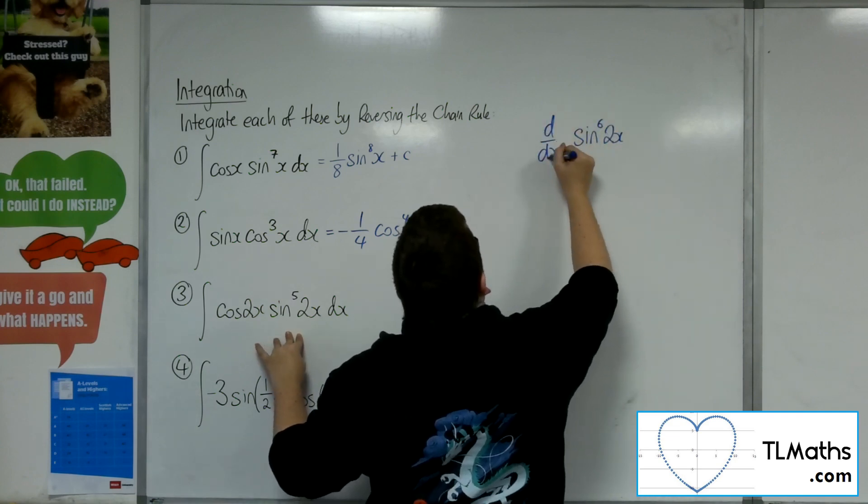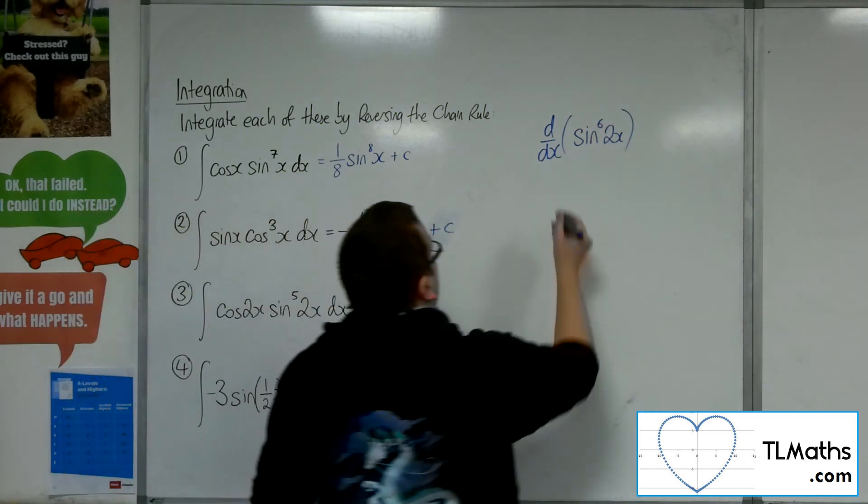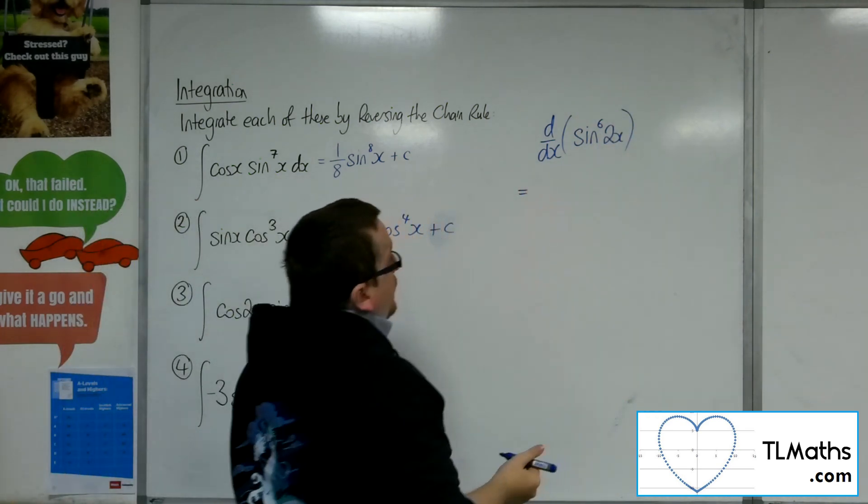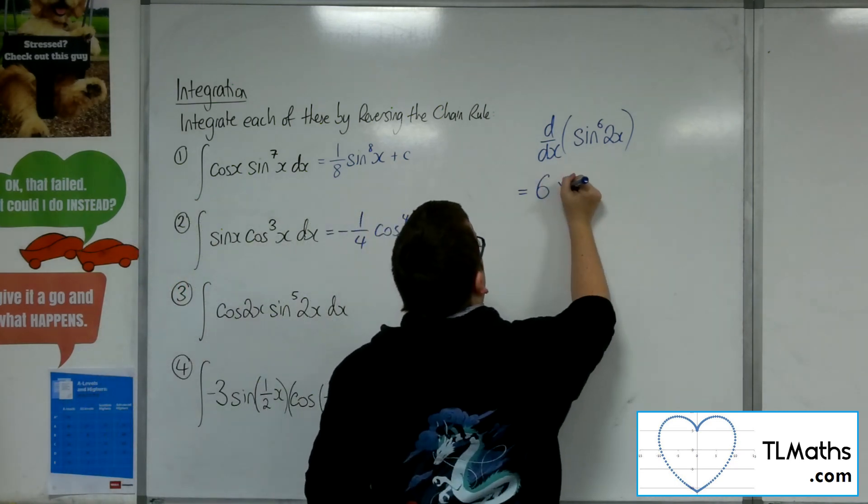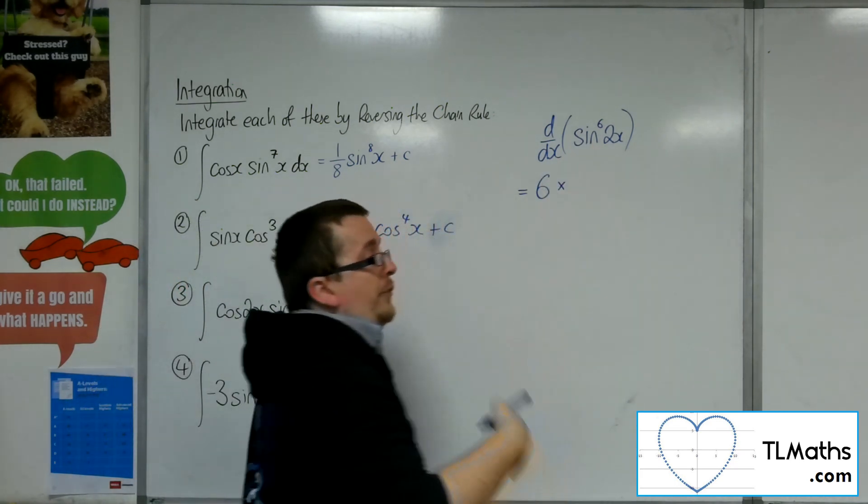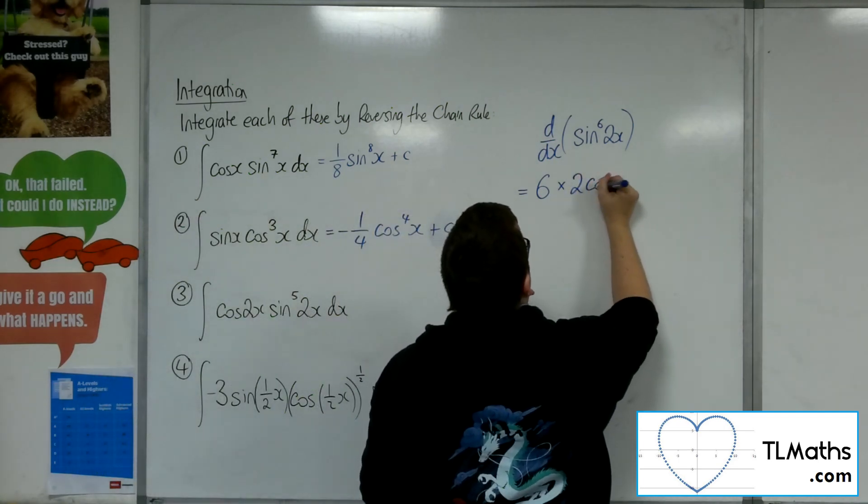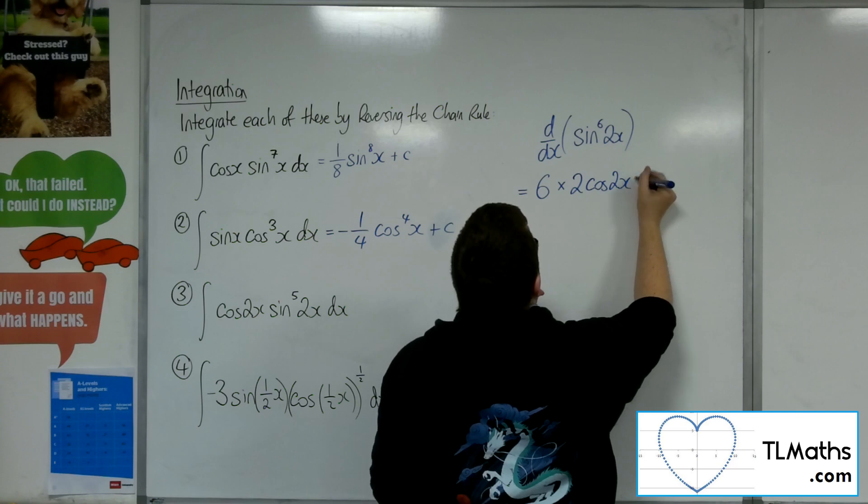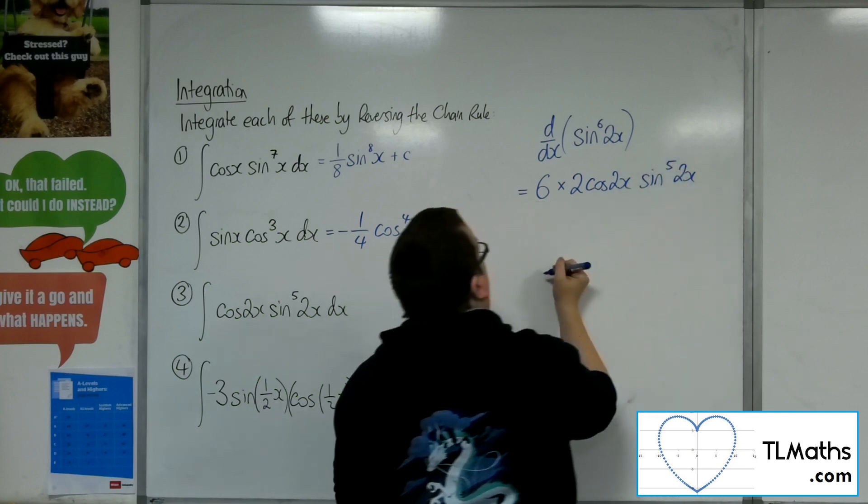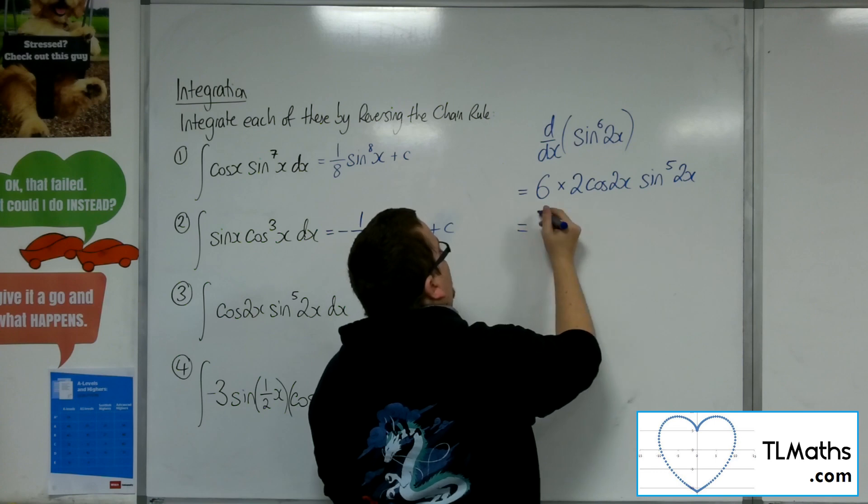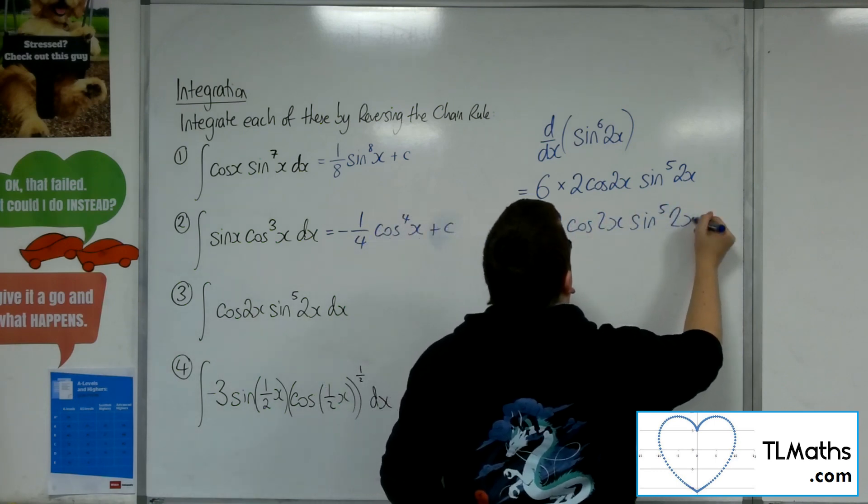So if I were to differentiate that with respect to x, what would I get? Well, I've got the 6 going to come down to the front. Now I've got the derivative of sine 2x, the function that's inside. So that would be 2 cosine 2x. And then I'm going to drop 1 from the power of the sine 2x. So that gives me 12 cosine 2x, sine to the 5, 2x.